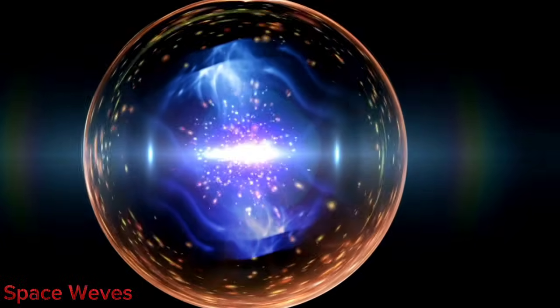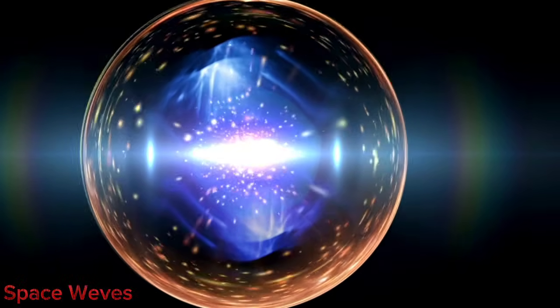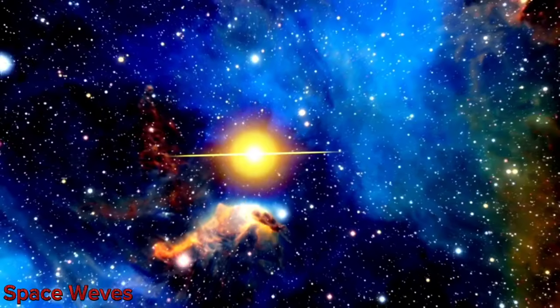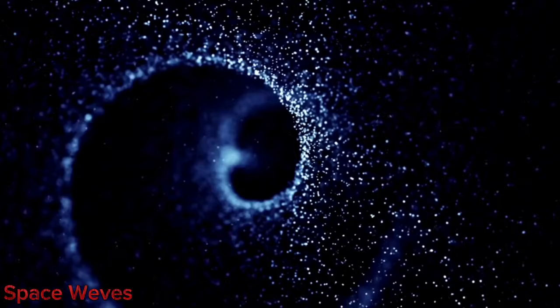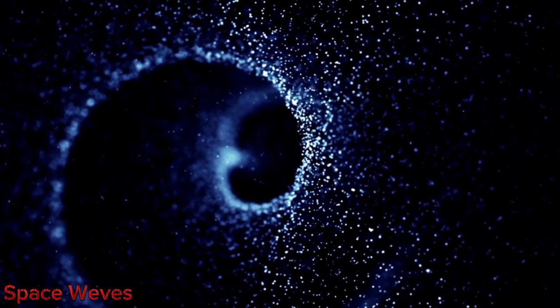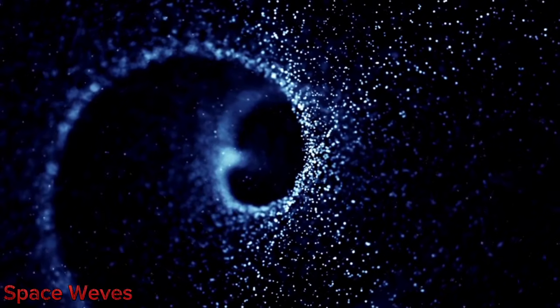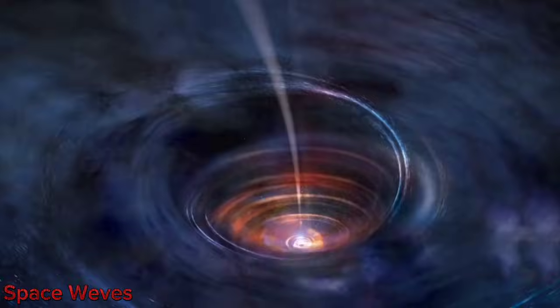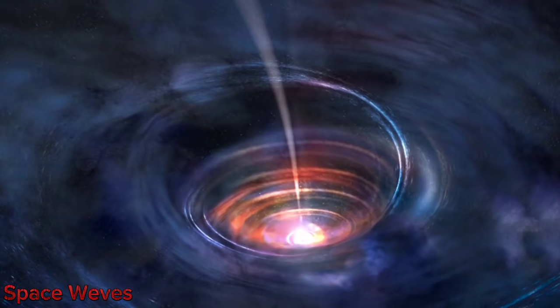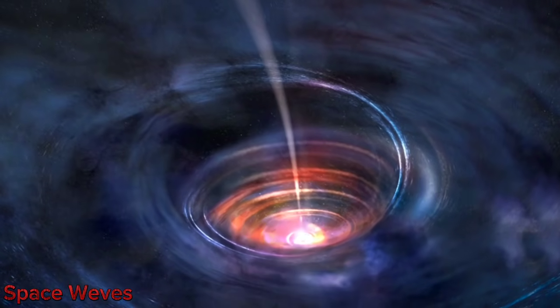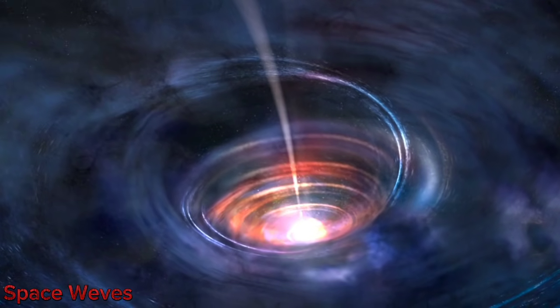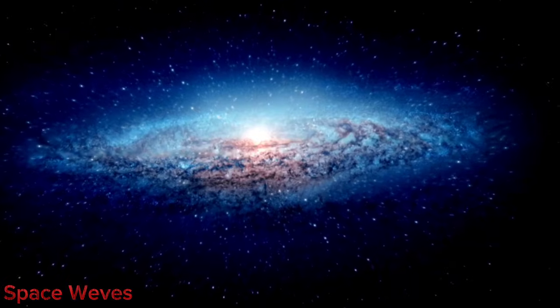Betelgeuse is considered a prime example of a red supergiant star, typically much larger than our sun. Brian Cox, along with other astronomers, believes it could explode as a supernova soon. People have become increasingly concerned about what will happen since the James Webb Space Telescope has been capturing exceptional images of the star. When exactly will Betelgeuse explode into a supernova, and how significant will its impact be on Earth?